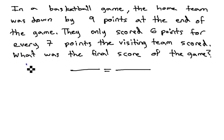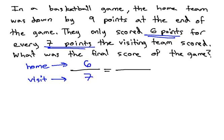Here, we're comparing the home team to the visiting team. We'll put the home team on top, and the visiting team on the bottom, though the order doesn't matter, as long as we're consistent once we've labeled them. To fill in the first fraction, we need numbers that compare the home team and visiting team together. We're told that the home team scored 6 points for every 7 points the visiting team scored. We'll use 6 for home, 7 for visitors.